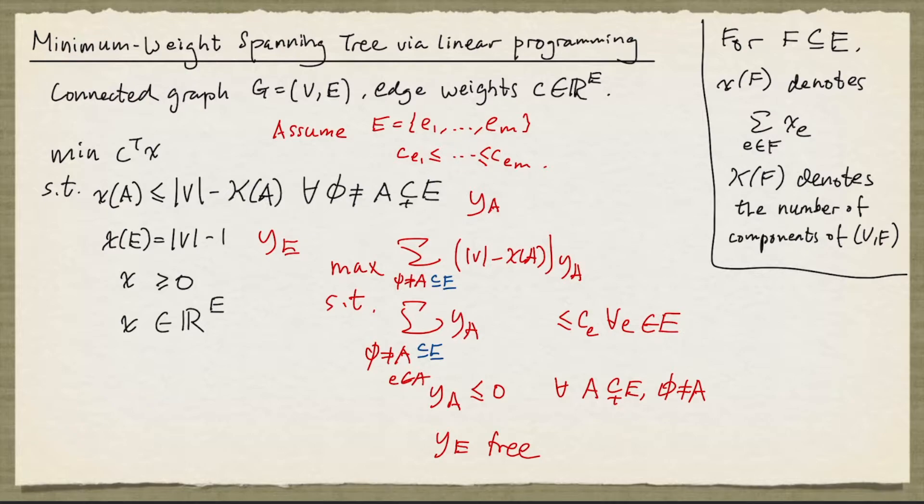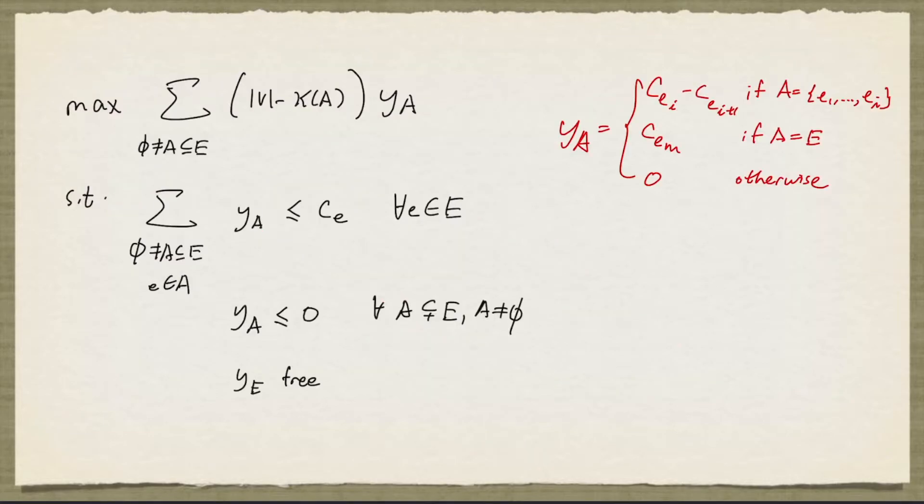So this is our dual problem. And remember that we have to construct a dual solution so that it, together with the incidence vector of the spanning tree returned by Kruskal's algorithm, satisfy the complementary slackness conditions. So here's the construction. This is our dual problem. And the way we construct the dual solution is given here.